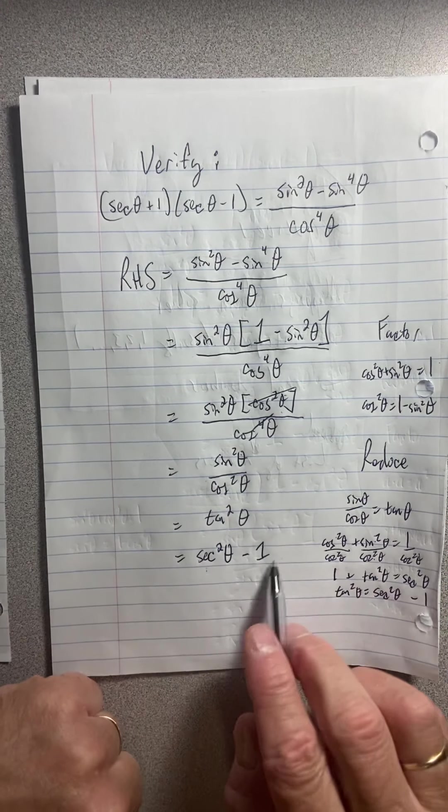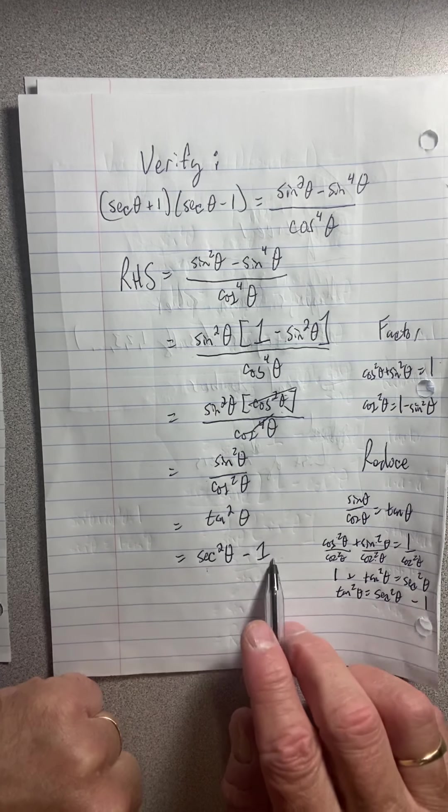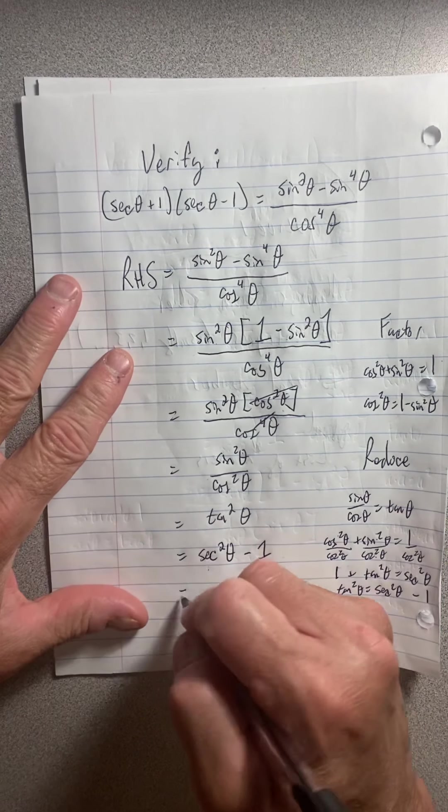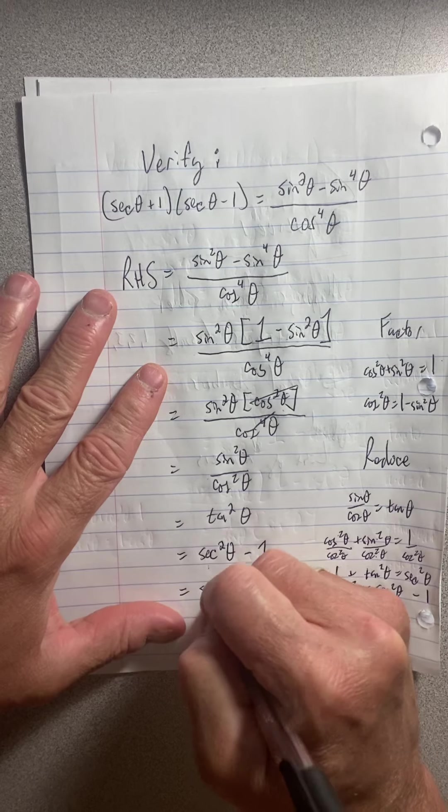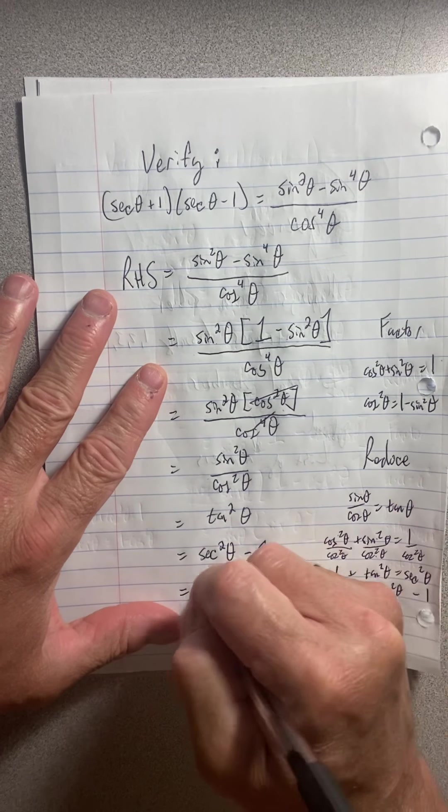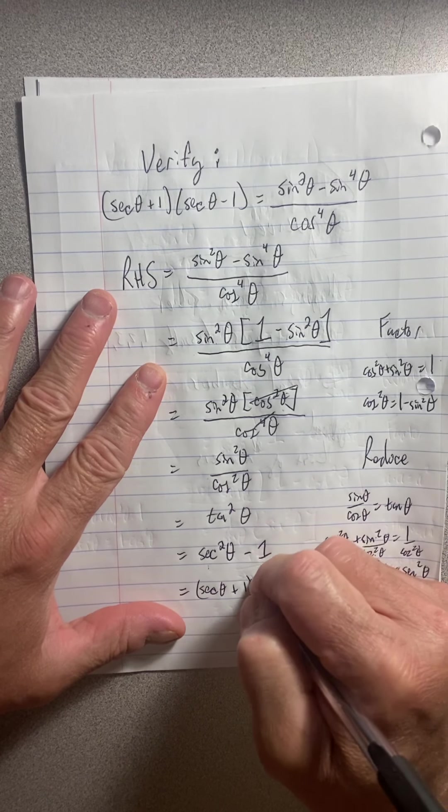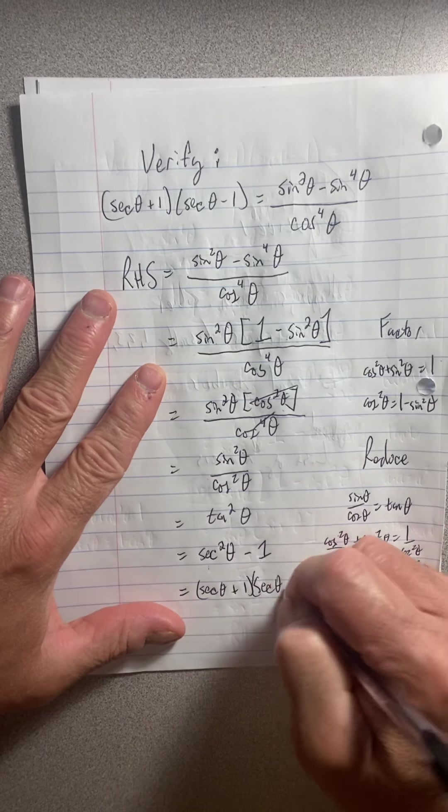Now I have a difference of squares. See the difference of squares here. So I can factor secant theta plus one, secant theta minus one.